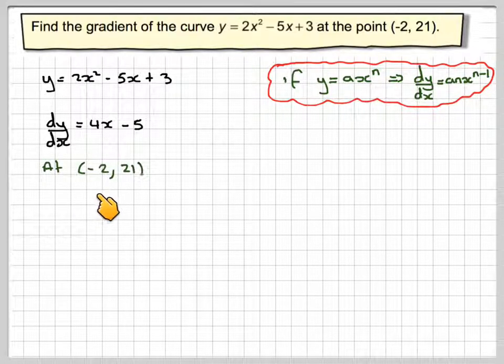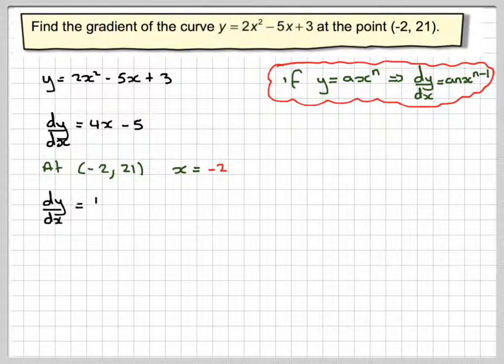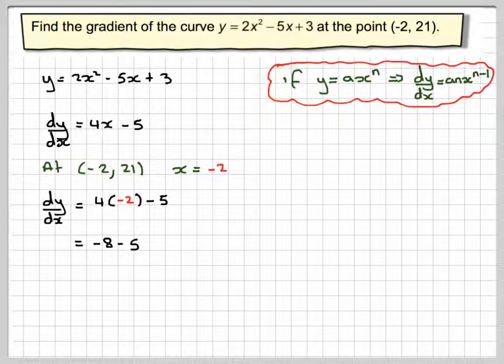So at the point (-2, 21), x is equal to minus 2. So we'll put minus 2 in here, we're going to get that dy by dx is going to be 4 times minus 2, take away 5, which is going to be minus 8, take away 5, which is going to be minus 13.